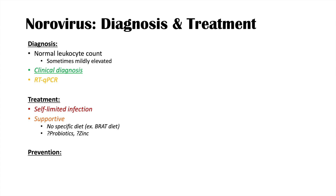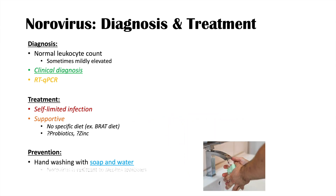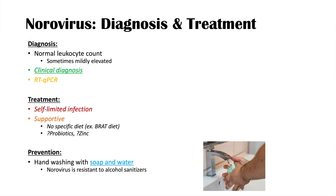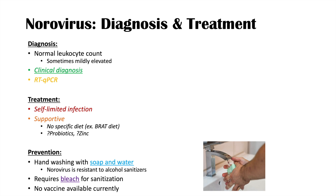Because the norovirus is extremely stable in the environment, specific prevention methods are required. Hand washing must be done with soap and water — the norovirus is actually resistant to alcohol sanitizers, so alcohol-based hand sanitizers are not sufficient. To sanitize a contaminated environment, bleach must be used, as other sanitizers don't work — the virus is too stable and resistant. Currently, there is no vaccine available, though work on a norovirus vaccine is ongoing.